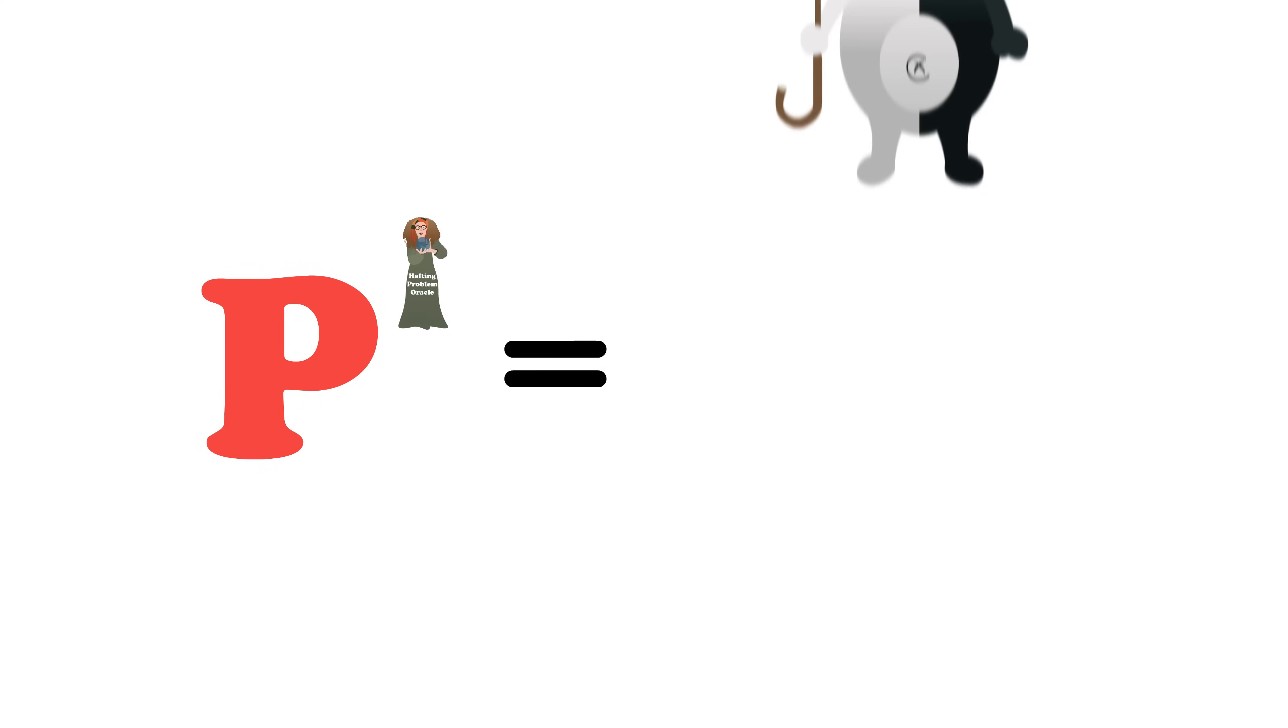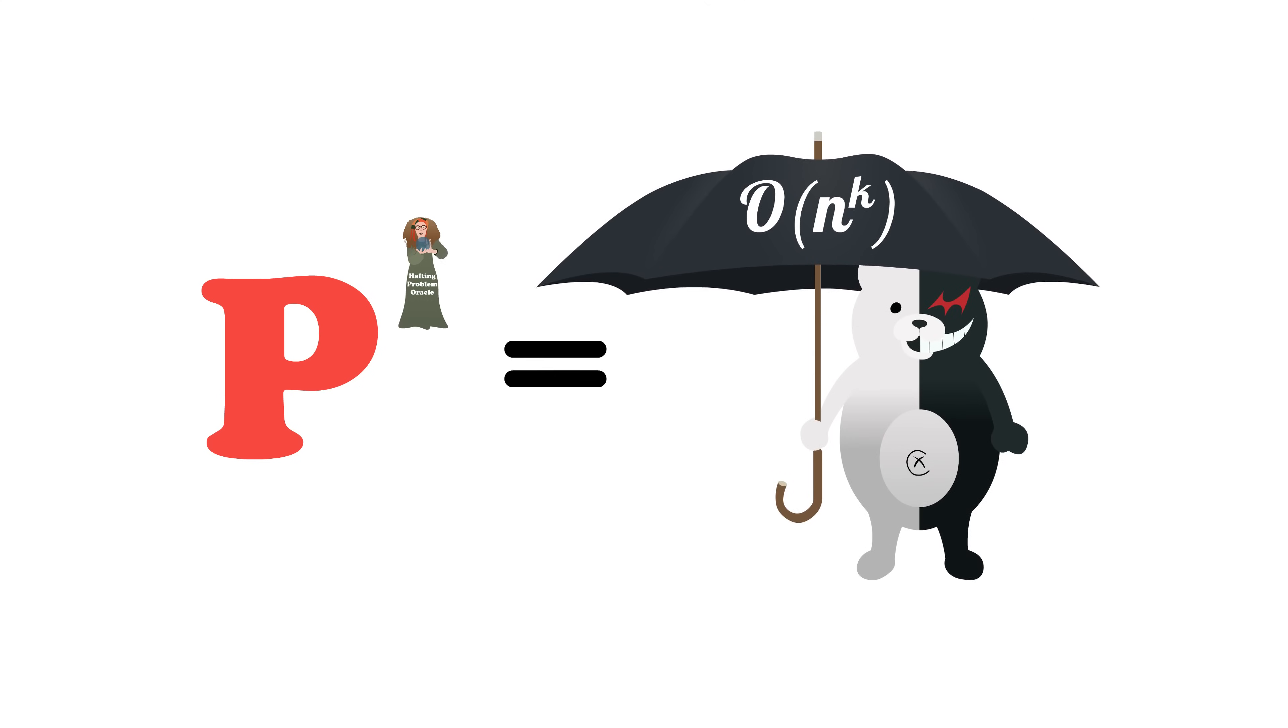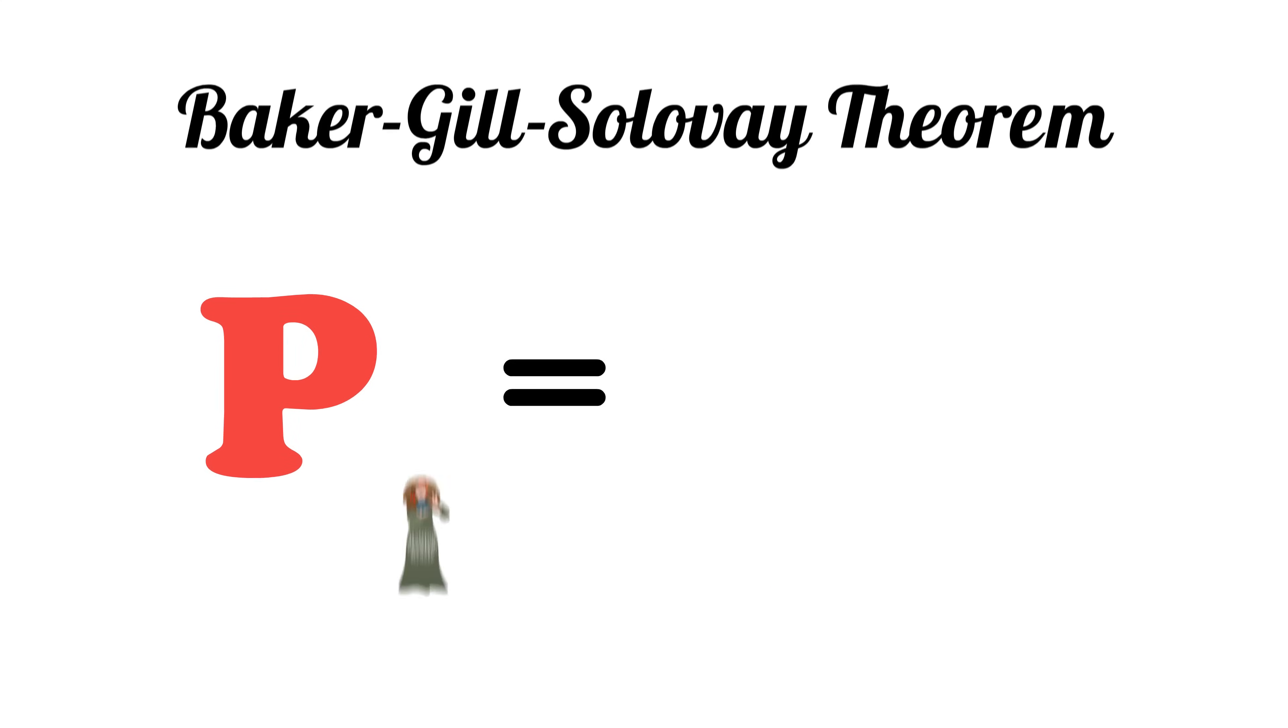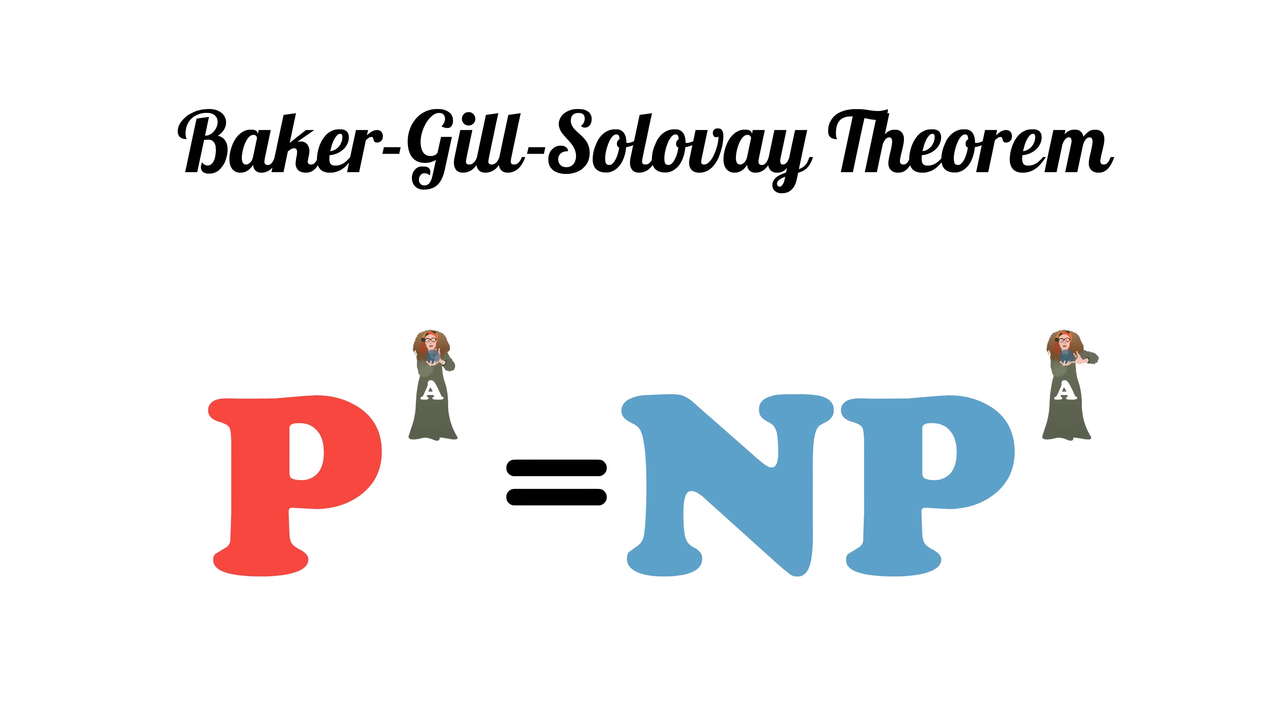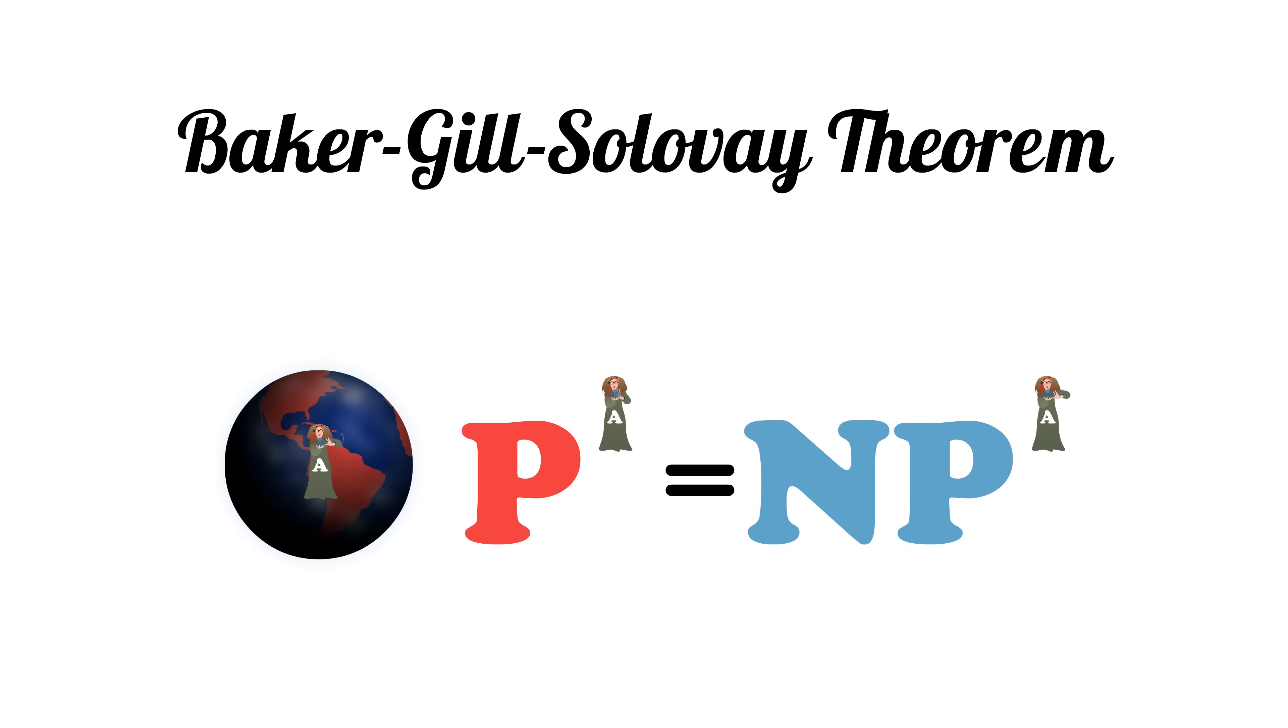Baker-Gill-Solovey shows that there is an oracle A such that P with A and NP with A are the same class. In the universe with oracle A, P equals NP.